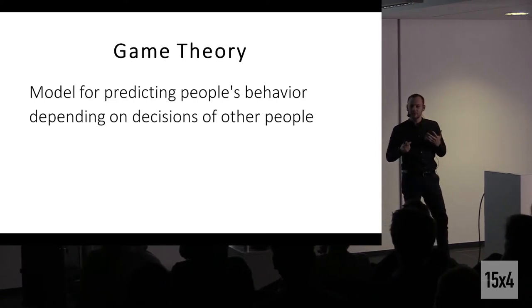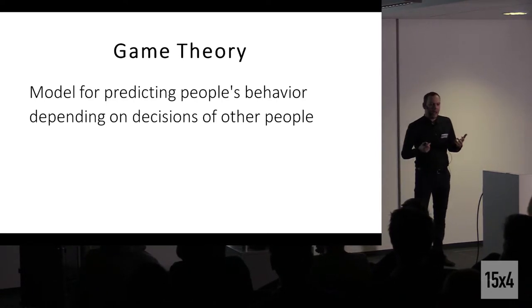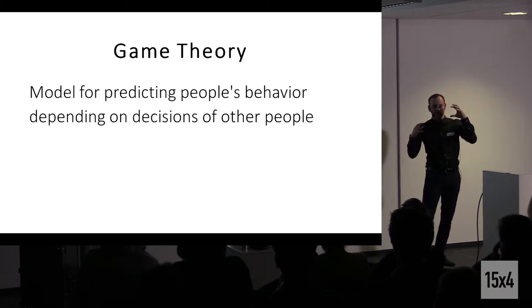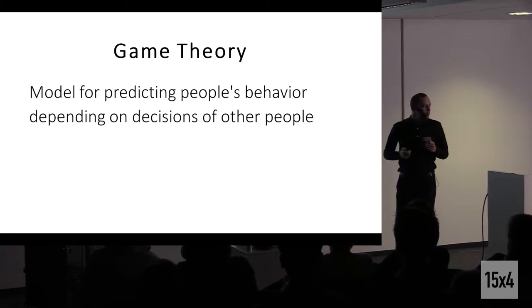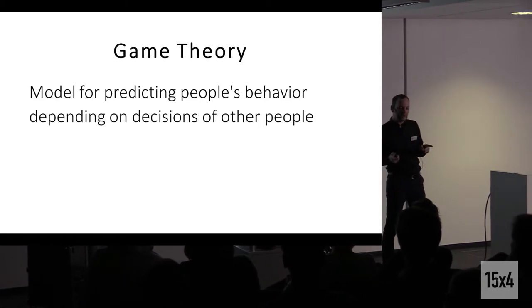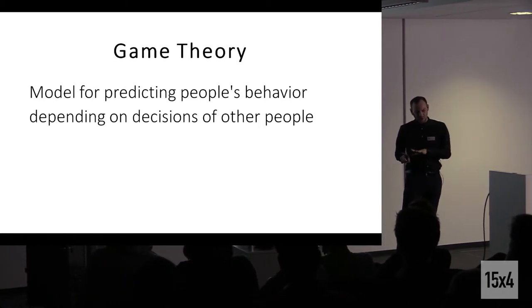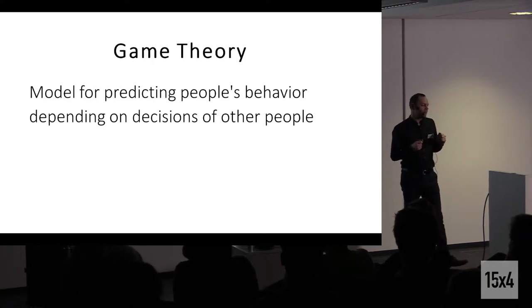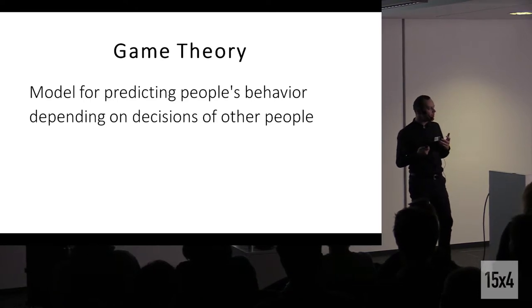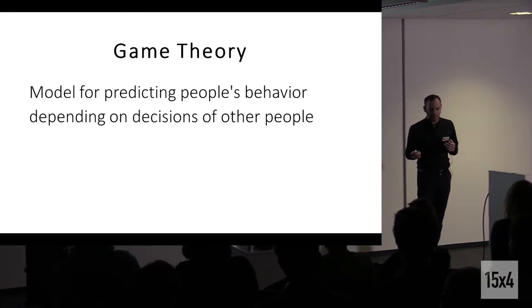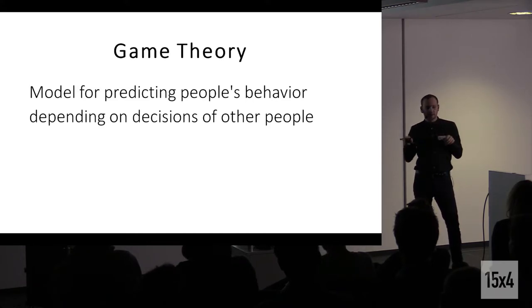So game theory is a mathematical approach for predicting people's behavior depending on decisions of other people. So a game is being played whenever people have anything to do with each other, and there's always some kind of conflict and cooperation in these situations. For example, Romeo and Juliet have played a teenage mating game which didn't work out too well. USA and USSR have played a dangerous game during the Cold War with nuclear weapons. A supermarket manager deciding the price for his pizza is playing a game with all the other storekeepers around him. So all these are games.